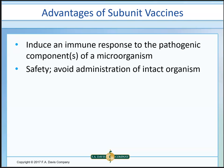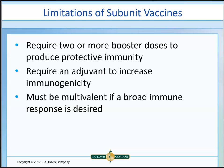Advantages of subunit vaccines: instead of giving the whole organism, we give just the pathogenic parts and induce an immune response against those parts — for example, giving the toxoid from tetanus rather than tetanus itself. Limitations include the need for booster shots (tetanus needs one every 10 years), the requirement for binding to a protein adjuvant to be more immunogenic, and sometimes the need for multiple serotypes to produce a broad immune response. It all depends on what you're trying to achieve.